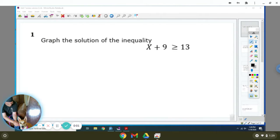Graph the solution of the inequality. To do that, we need to find the solution of the inequality. You're going to draw your line down the inequality sign. So it's x plus 9, so we're going to do the opposite and subtract 9 from both sides.